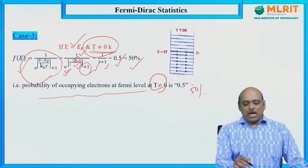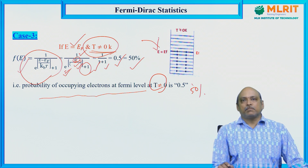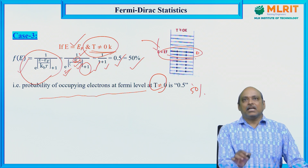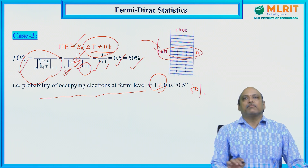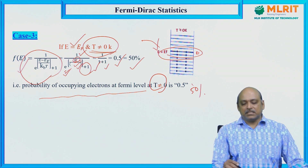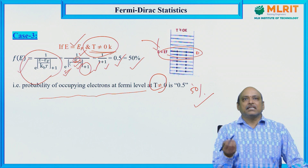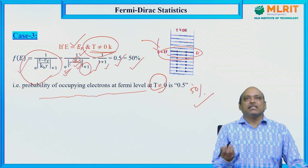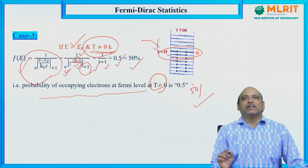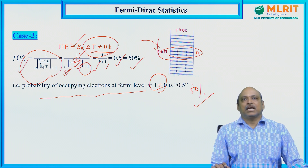As the temperature increases, the probability of occupying electrons at the Fermi energy level remains 50%. By taking E at different locations, we can calculate the F(E) probability values accordingly.